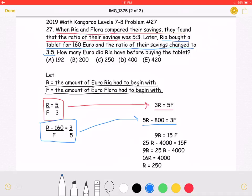From here, there are many ways you can solve the system of equations. I'm going to try to set them equal to each other by multiplying the first equation by 3 to get 9R equals 15F, and multiply the second equation by 5 to get 25R minus 4000 equals 15F.